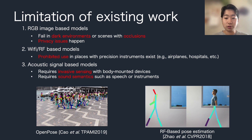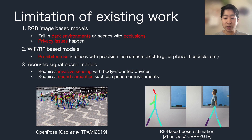Also, taking photos or videos with cameras can lead to privacy issues. Recently, Wi-Fi or RF-based methods have also been developed. They can successfully work in dark settings, but there are some restrictions in places with precision instruments, such as airplanes or hospitals.